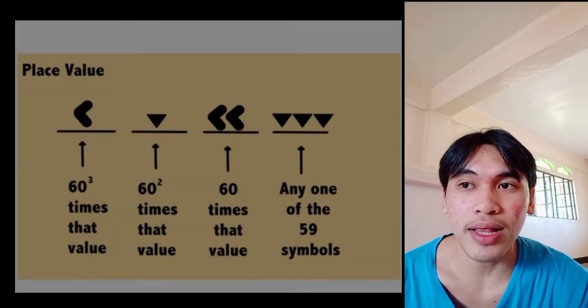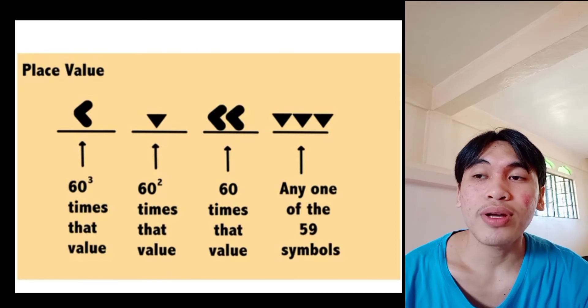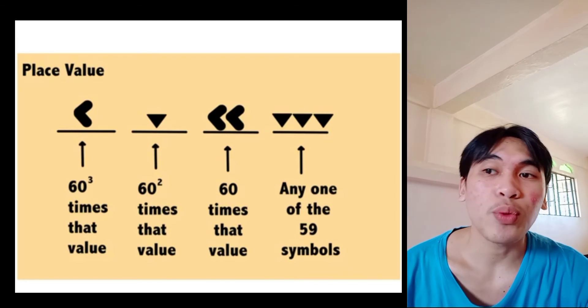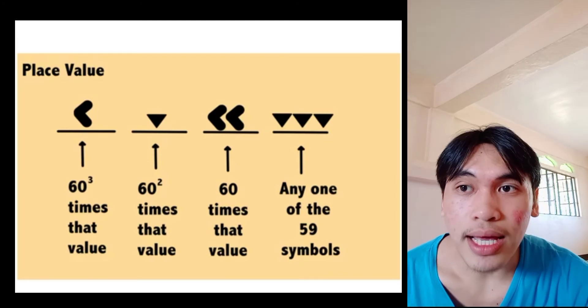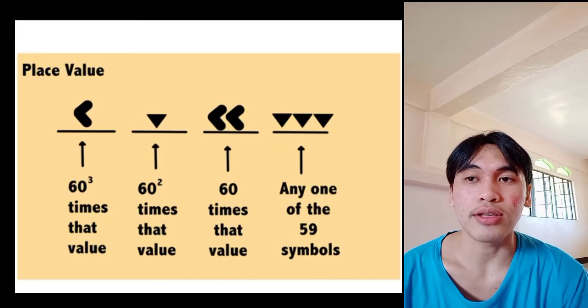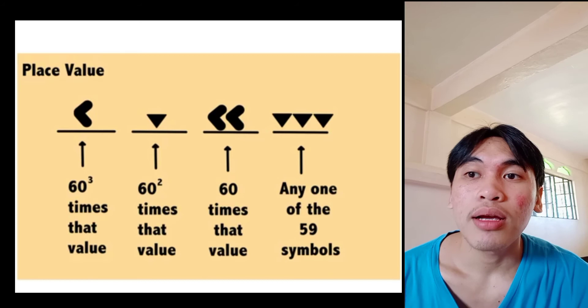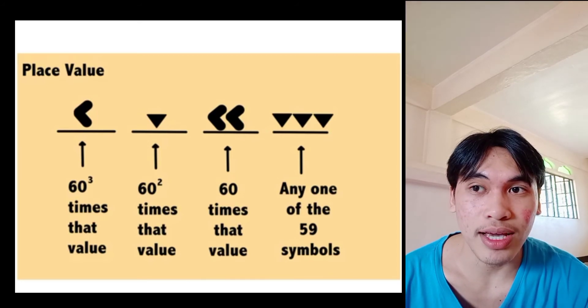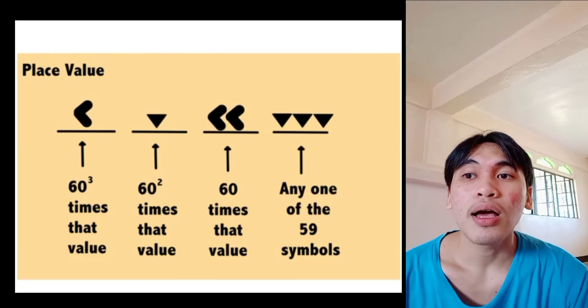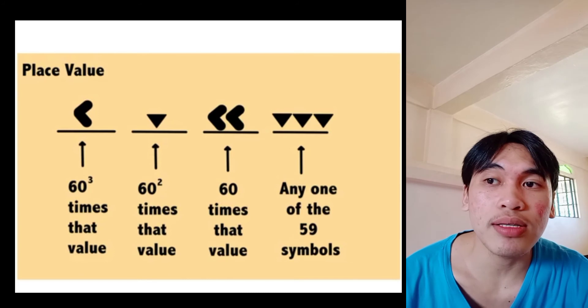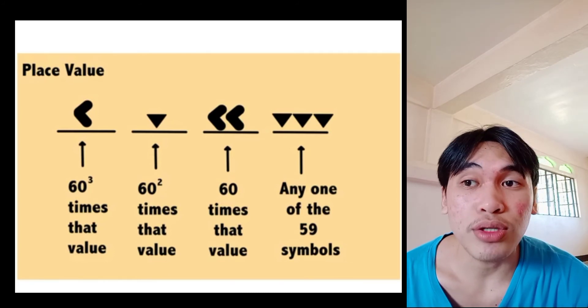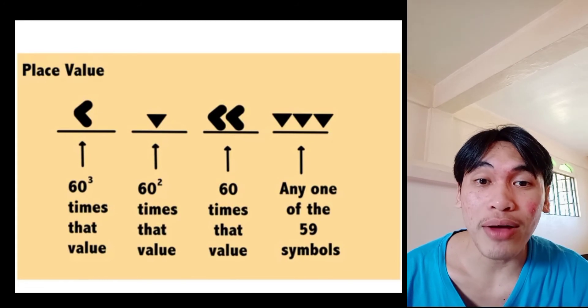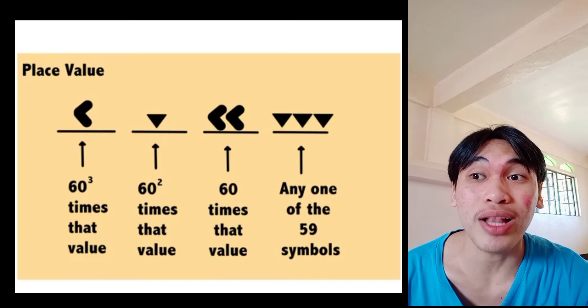Here is the place value. Like for example, this less than, 1 less than, then 1 downward triangle, then 2 less than, then 3 downward triangle. This 3 downward triangle is any one of the 59 symbols. Then it's 60. This 60 times the value is the 2, the 2 less than. We need to have space on it to determine the place value.